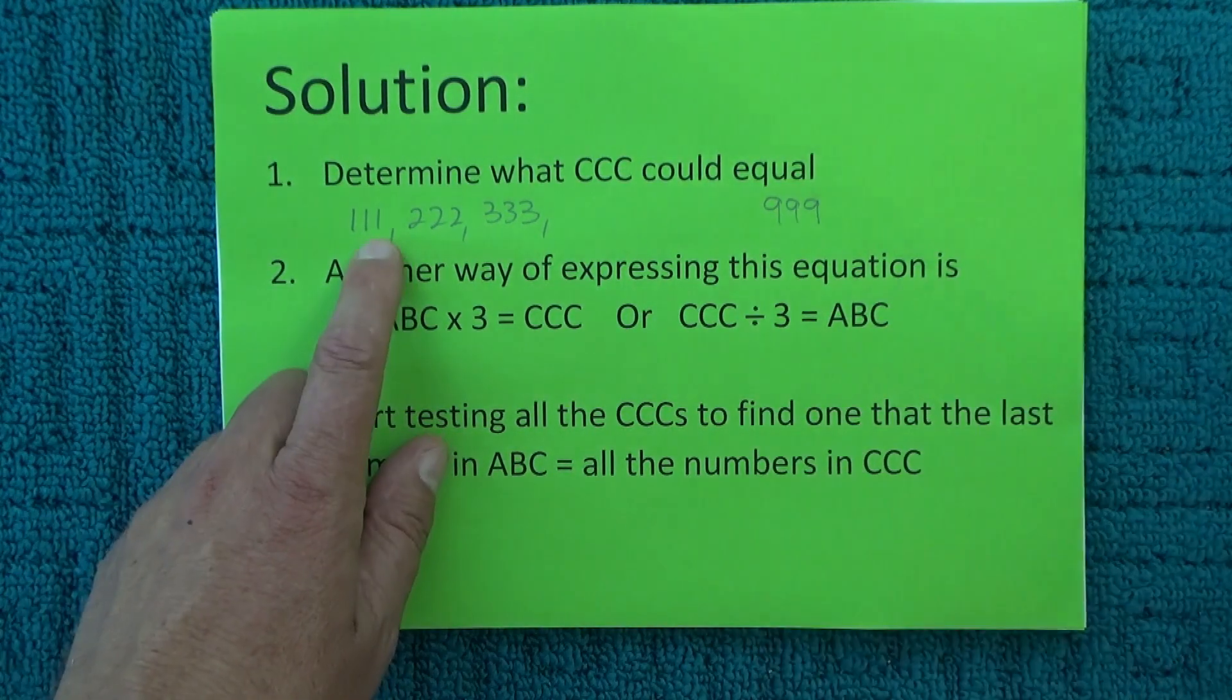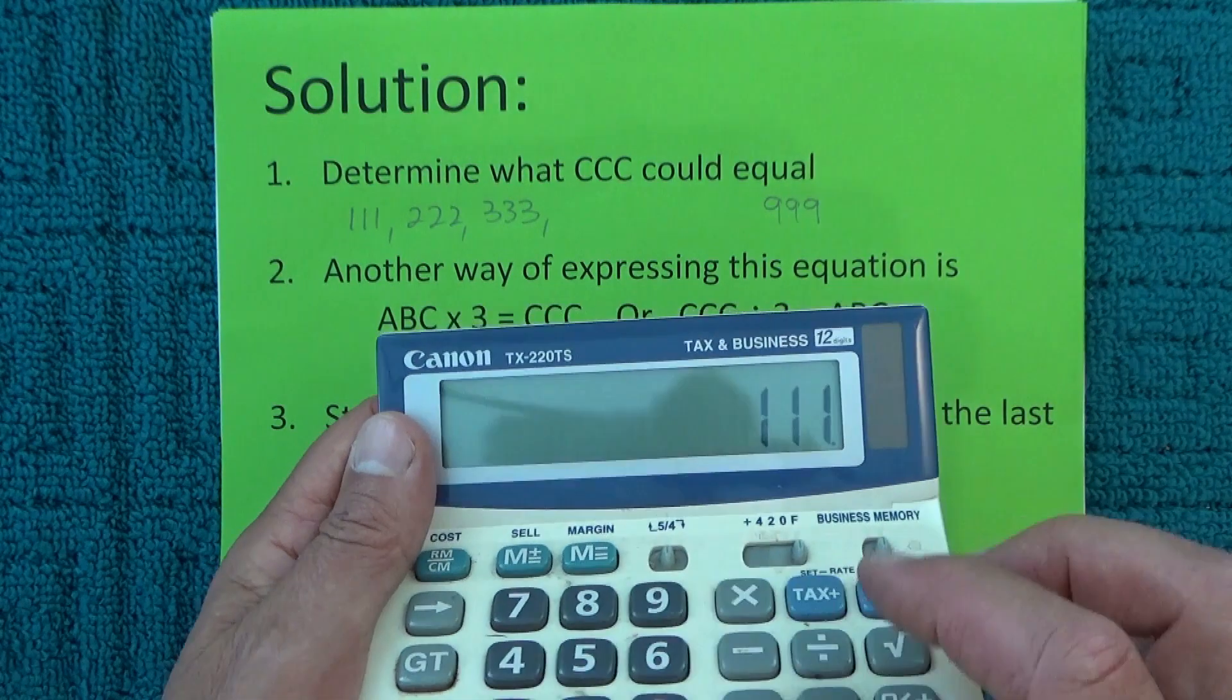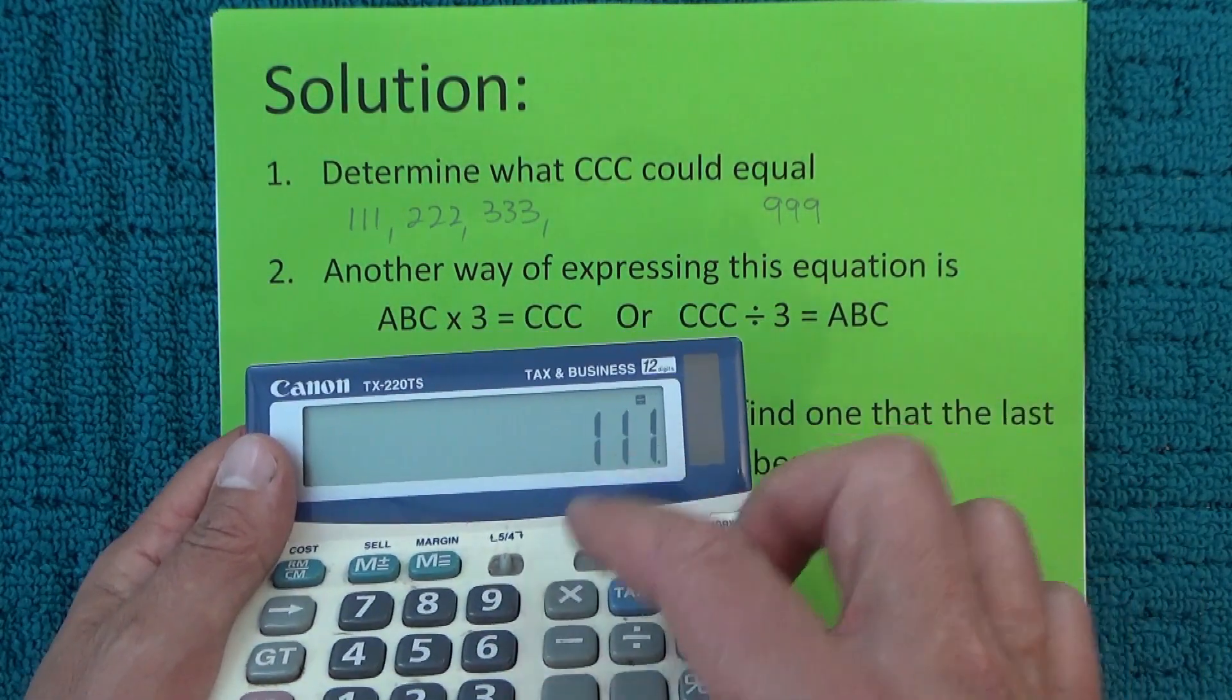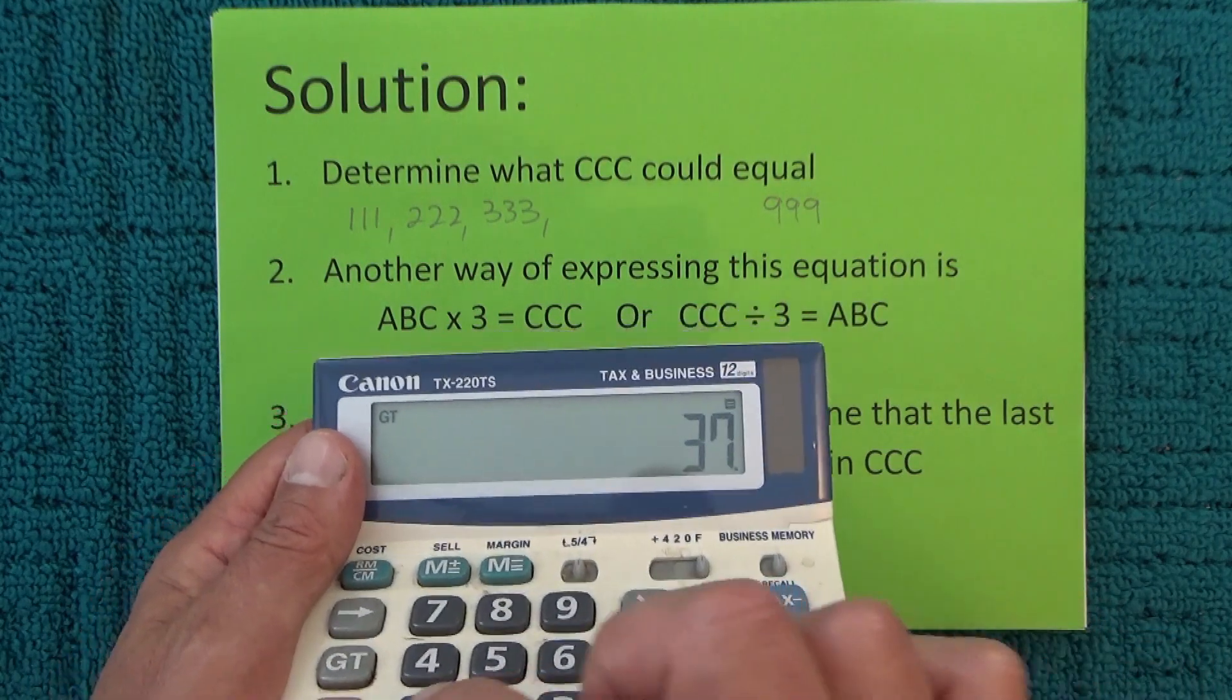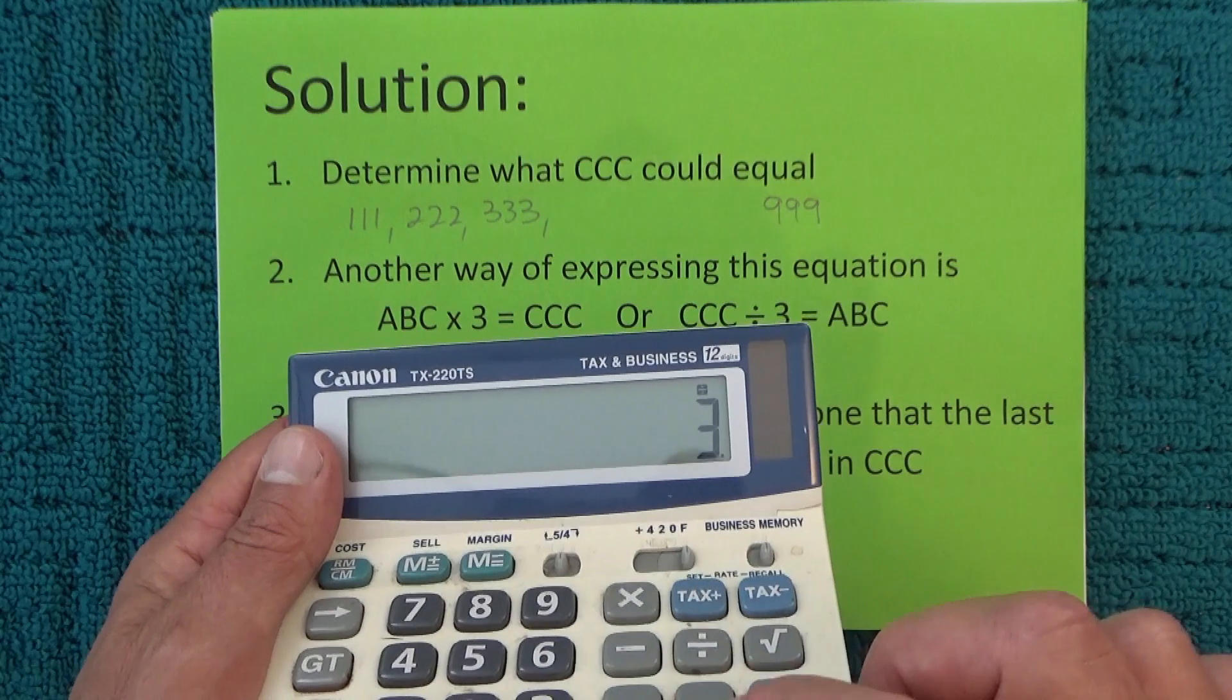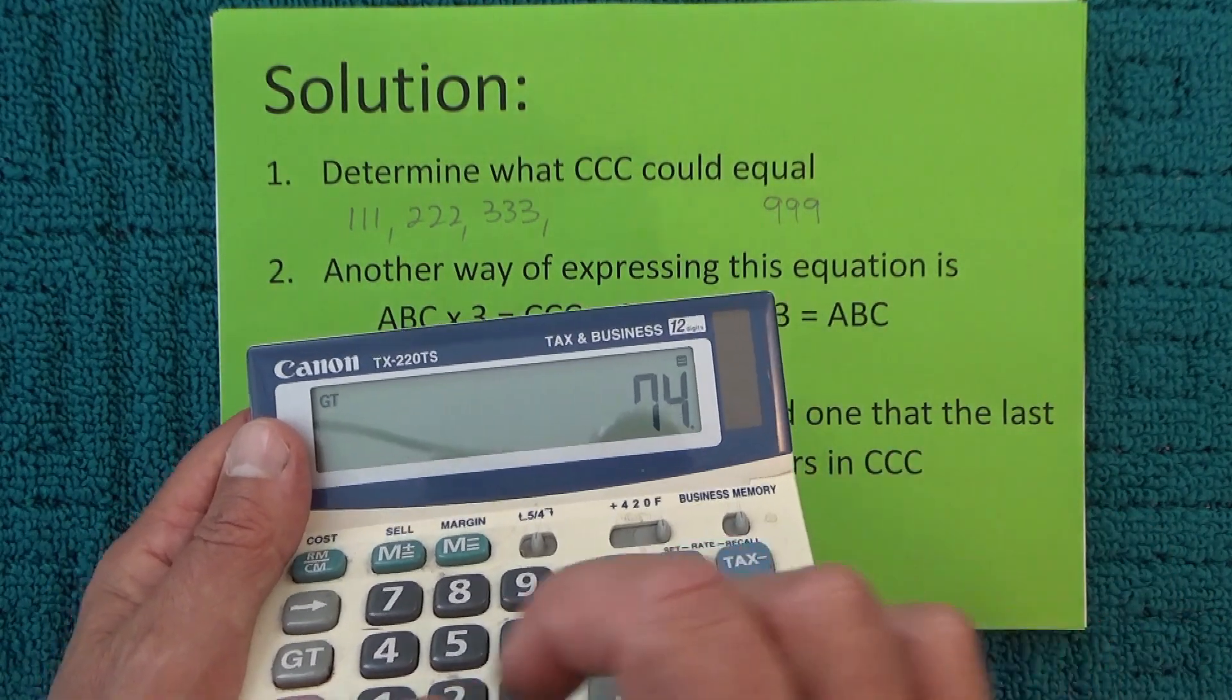What I mean by that is we'll go through 111, divide by 3, and see if that number has 1 as the last digit. That gives us 37, which is not a match. Then 222 divided by 3 has a last digit of 4, so that's no good.